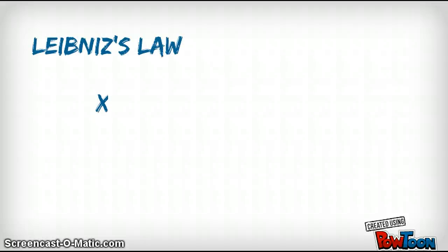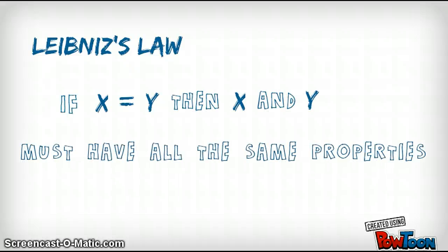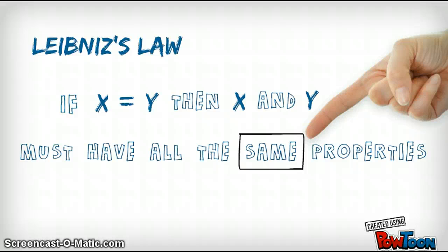Leibniz's law states that if we have a thing x and a thing y, if x equals y — that is, if x and y are identical — then x and y must have all the same properties. That is, there is nothing that is true of x that is not true of y, and nothing that is true of y and not true of x.